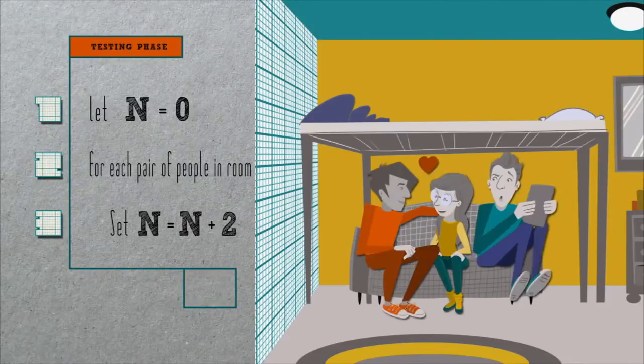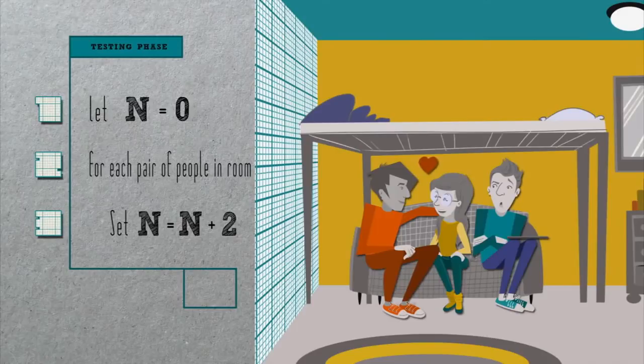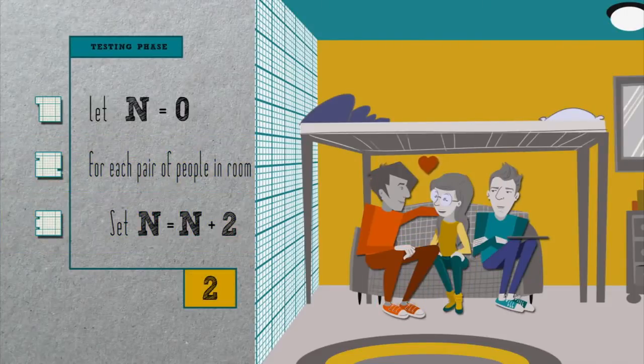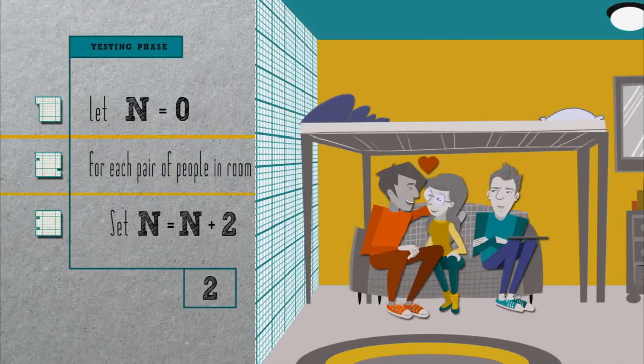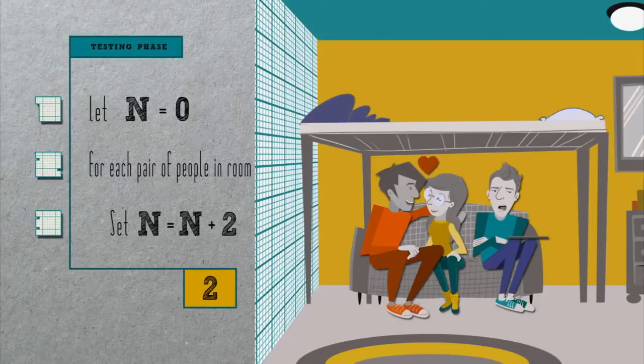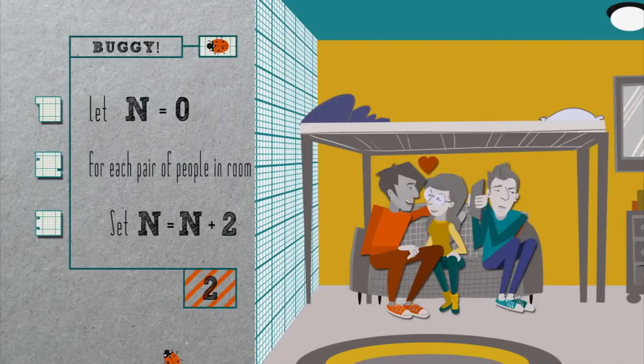But what if there are three people in the room? How does this algorithm fare? Let's see. In line one, we initialize n to zero. For a pair of those people, we then increment n by two, but then what? There isn't another full pair of people in the room, so line two no longer applies. And so by this algorithm's end, n is still two, which isn't correct. Indeed, this algorithm is said to be buggy because it has a mistake.